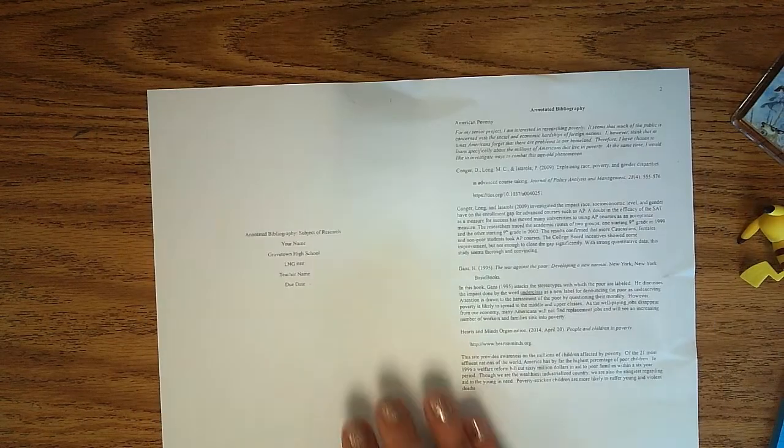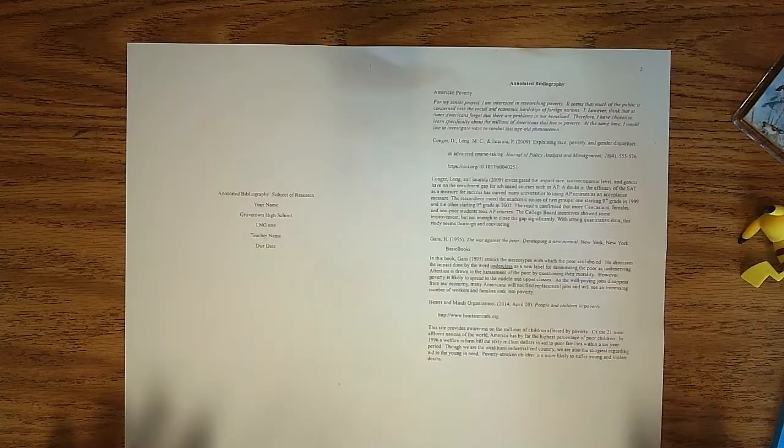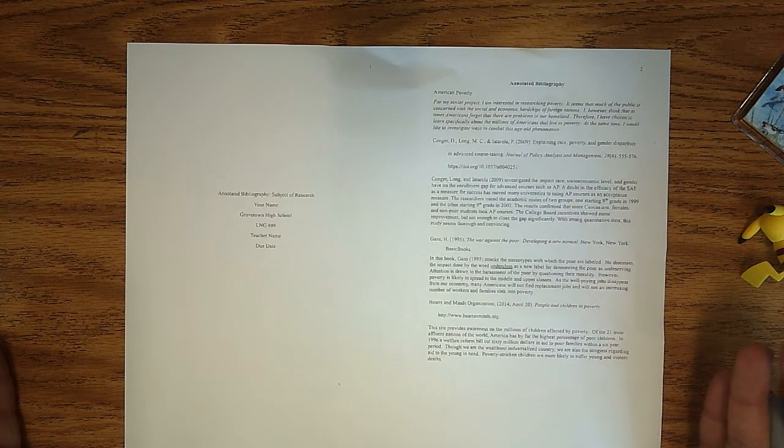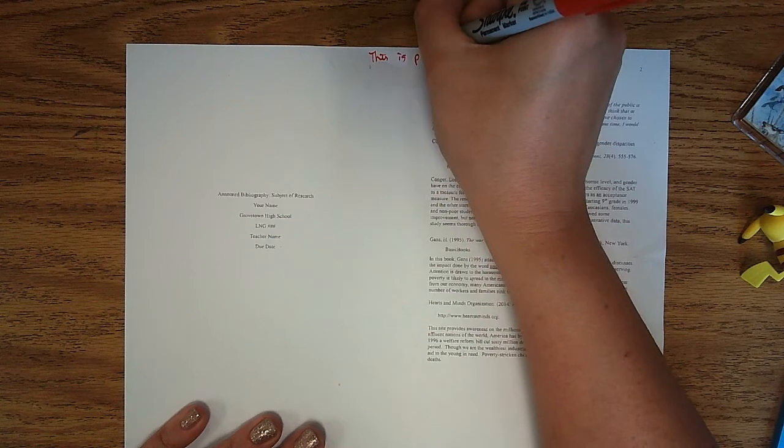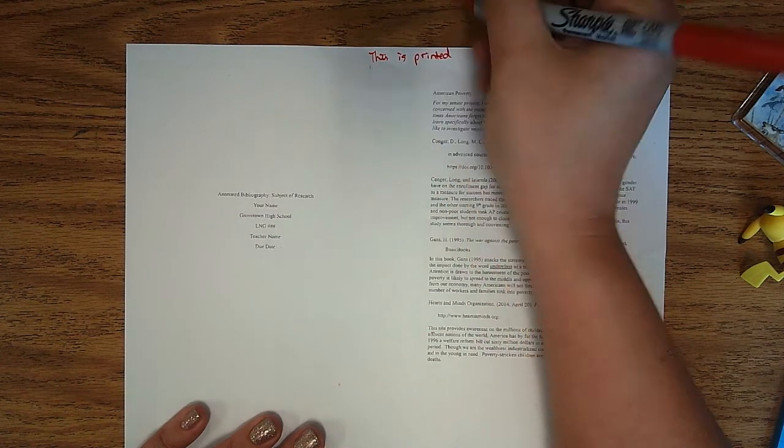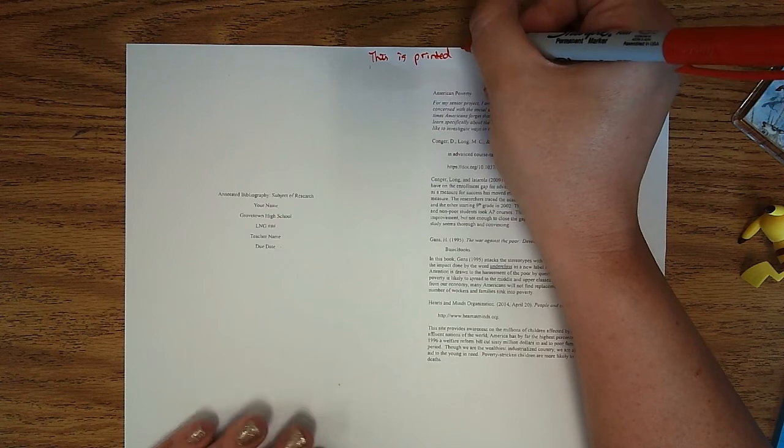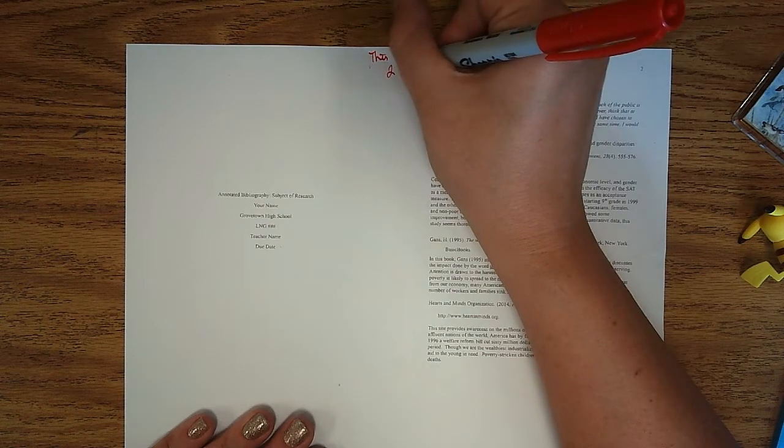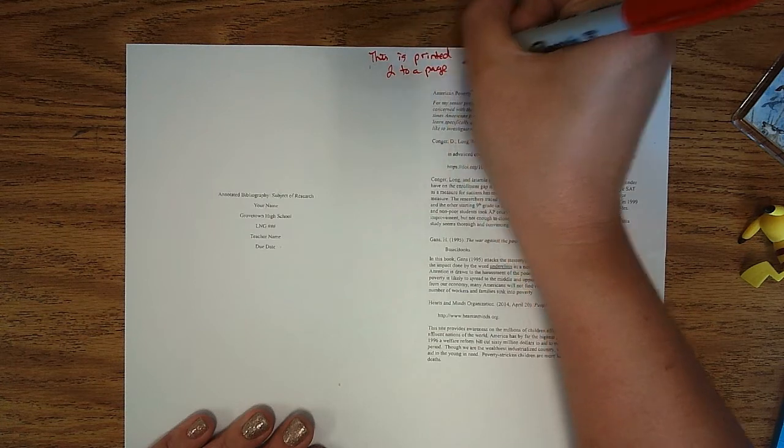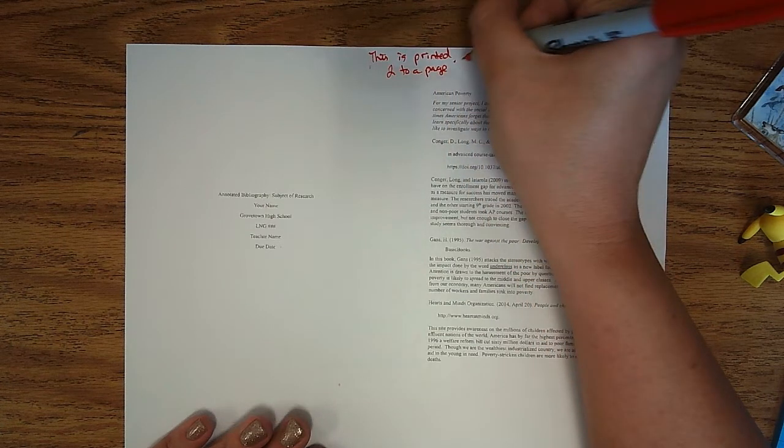Alright, so if you flip that page over, you're going to see this is an example of one. And I have printed it two to a page. This is printed two to a page. Yours won't be printed probably. I don't think I'm having my students print them. I think I'll be looking at it electronically. But you won't be doing it two to a page. This is just an example, okay?